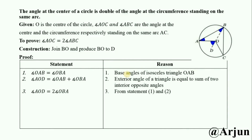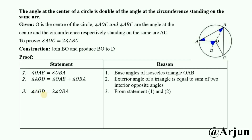Statement 2: Angle AOD equals angle OAB plus angle OBA, because angle AOD is an exterior angle of triangle OAB, equal to the sum of the two interior opposite angles. Statement 3: Therefore, angle AOD equals two times angle OBA, combining statements 1 and 2, since OAB plus OBA equals 2 × OBA.